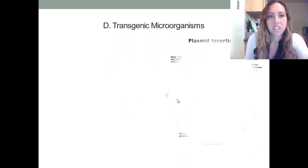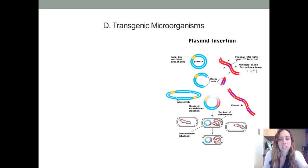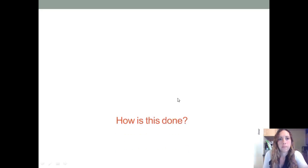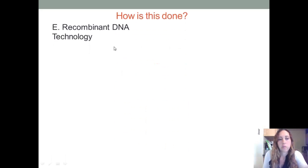Transgenic microorganisms are a microorganism, plant, or animal that has been genetically altered to contain a gene from another organism, usually from a different species. Here is a picture of how that happens, which I'll explain in just a moment. This is done through recombinant DNA technology.